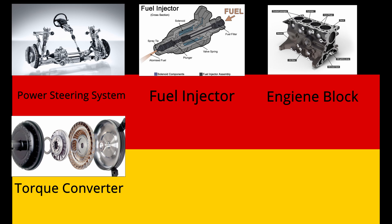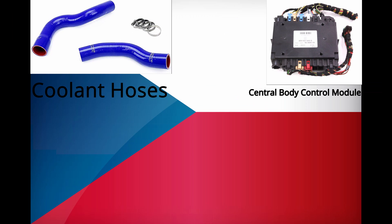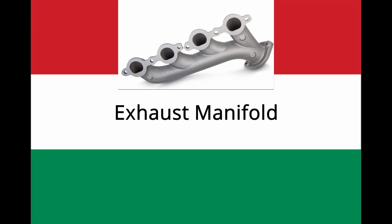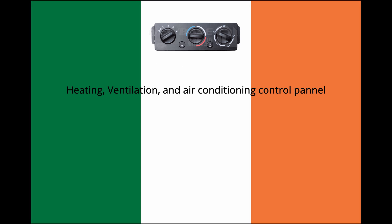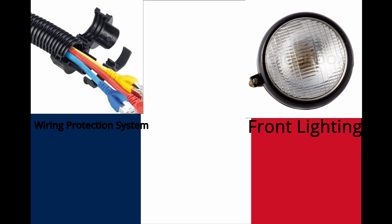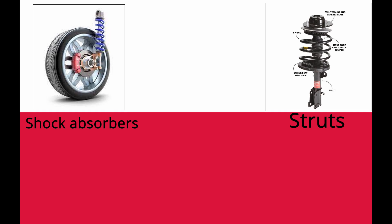But the UK imports the power steering system, fuel injector, engine block, and torque converter from Germany. The coolant hoses and body control module come from the Czech Republic. Exhaust manifold from Hungary. Heating, ventilation, and air conditioning control panels from Ireland. The wiring protection system and front lighting from France. And finally, shock absorbers and struts from Poland.